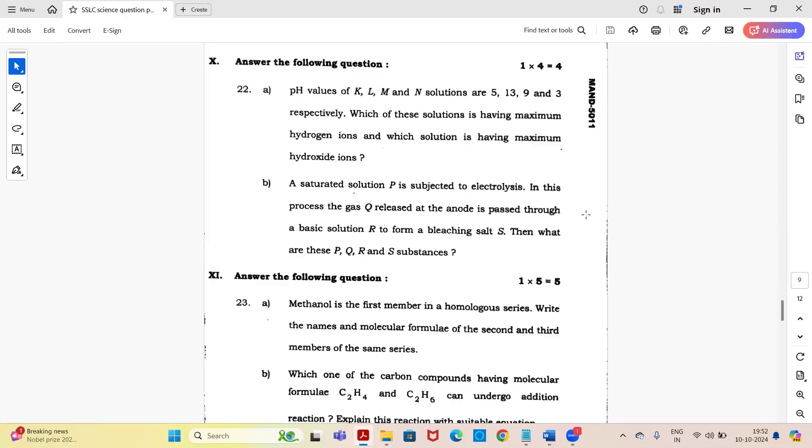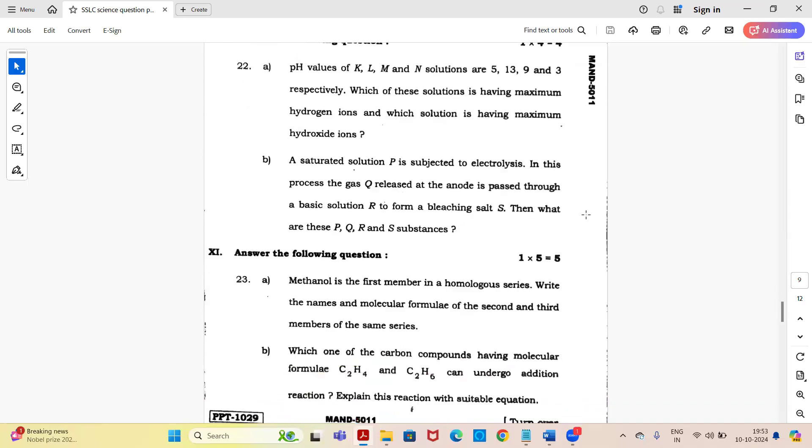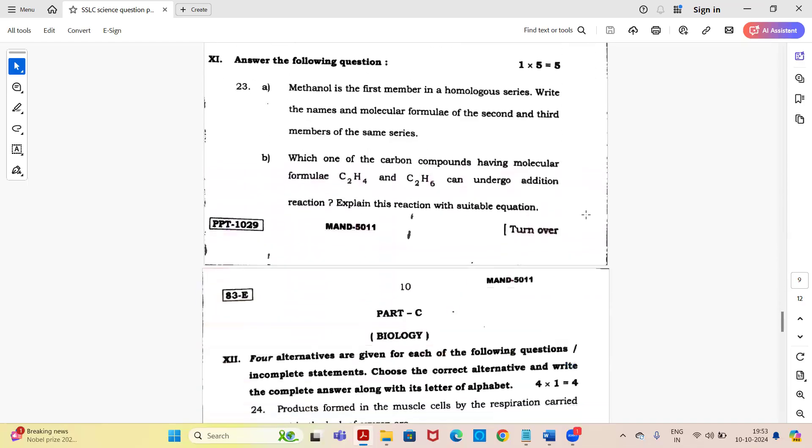Answer the following question for four marks. pH values of K, L, M and N solutions are 5, 13, 9 and 3 respectively. Which of these solutions has maximum hydrogen ions and which has maximum hydroxide ions? Sub question B: a saturated solution P is subjected to electrolysis. In this process, the gas Q released at the anode is passed through a basic solution R to form a bleaching salt S. Then what are these P, Q, R and S substances? These are two sub questions, two marks each. Entire main is for four marks.